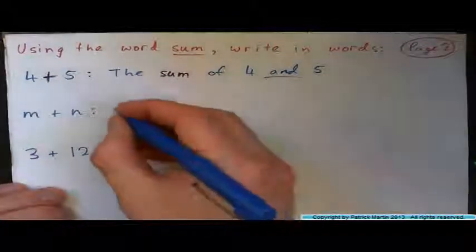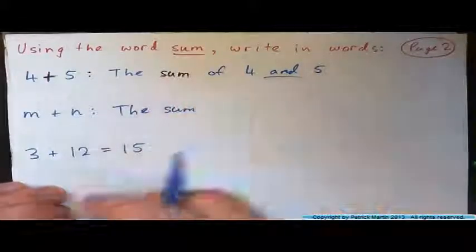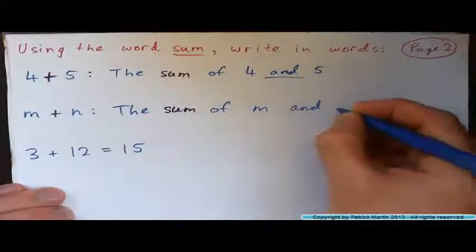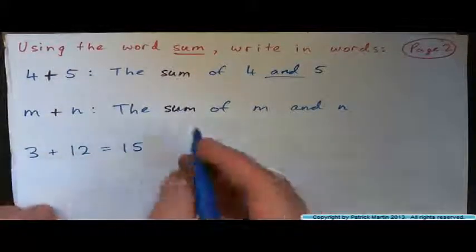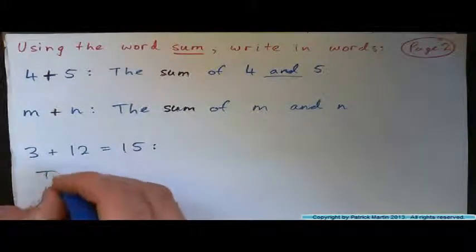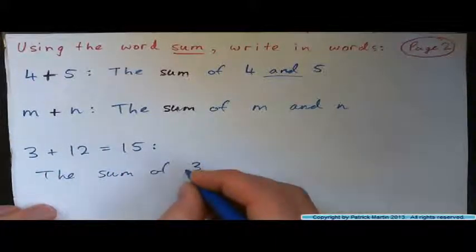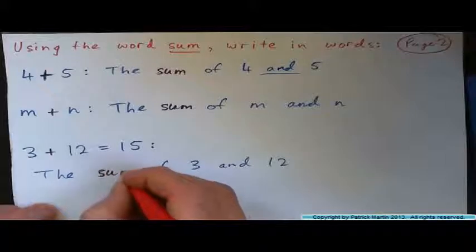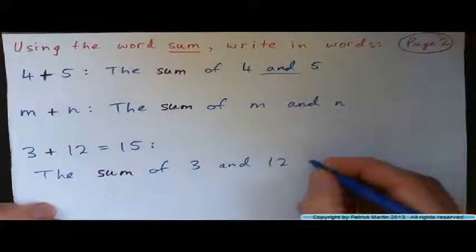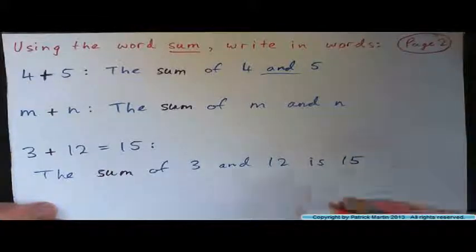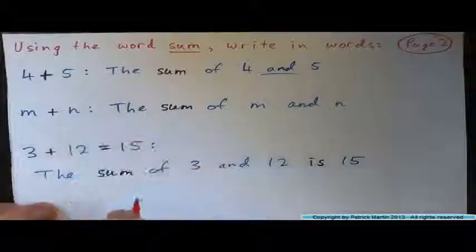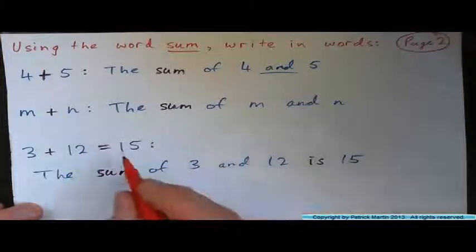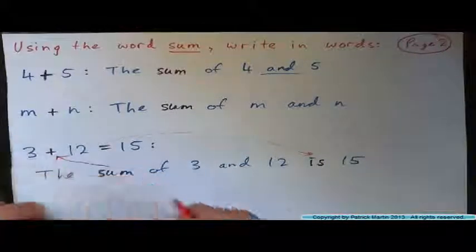Four plus five. So m plus n is the sum, the sum adding of what? The sum of m and n. Three plus twelve equals fifteen can be written as, so the sum of three and twelve. So the plus becomes sum. And instead of writing equals, we can actually write is fifteen or equals fifteen, same thing. Is is the same thing as equals. Three and twelve is fifteen. The sum of three and twelve is fifteen. So the equals corresponds to is, sum corresponds to plus.